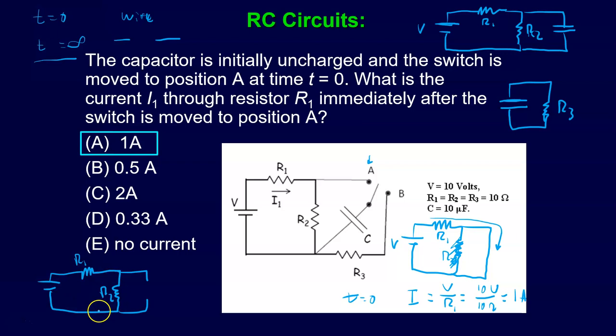And so now the current doesn't go through the capacitor at all, it just goes through these two guys. And so now my current would be V, and it would be divided by the sum, because R1 and R2 in this case are in series. And so what is it, both 10, so it would be 10 divided by 20, or one-half amps would be the current in that case.